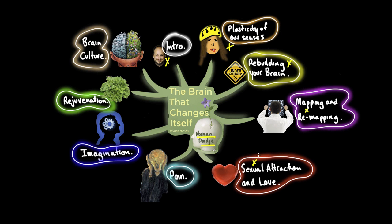We'll also cover sexual attraction and love and how that relates to the brain, pain, imagination - how closely that partners with the material brain, rejuvenation - how we grow new neurons and extend the life of existing neurons, brain culture - how culture affects the brain, and finally a last word.